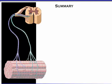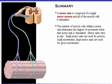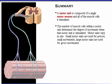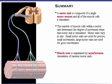Here's a summary of what we've covered. A motor unit is composed of a single motor neuron and all of the muscle cells it stimulates. The number of muscle cells within a motor unit determines the degree of movement when that motor unit is stimulated. Motor units vary in size: small motor units are used for precise small movements, and large motor units are used for gross movements. Muscle tone is maintained by an asynchronous stimulation of random motor units. Click the quiz button to go to the self-quiz.